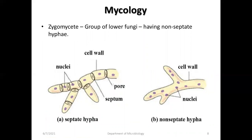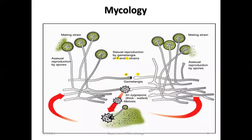Looking at the structural details of Zygomycetes: Zygomycetes is a group of coenocytic organisms whose hyphae are generally non-septate, or sparsely septate, as seen in pictures. These members reproduce asexually by sporangiospores formed within a sac called a sporangium.